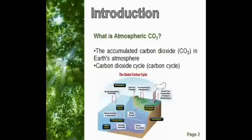So what exactly is atmospheric carbon dioxide? There is a fixed amount of carbon on Earth, stored somewhere in the carbon cycle where carbon is stored in living things and in the Earth. The carbon that is released by respiration of living things is atmospheric carbon dioxide.